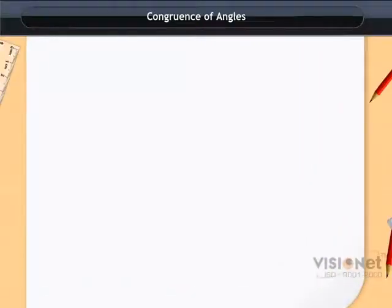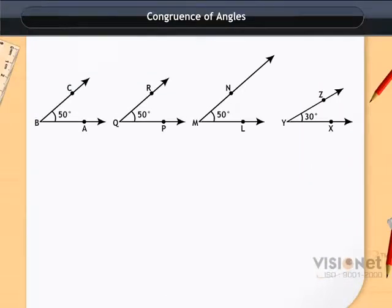Congruence of Angles. Look at the four angles shown in the animation. Trace the angle ABC and place it over the angle PQR. Place B on angle Q and the ray AB along PQ. Clearly the angle ABC exactly fits the angle PQR.